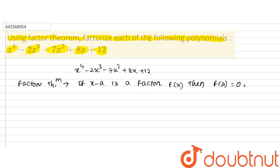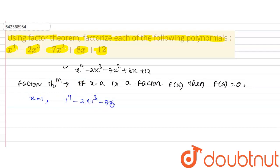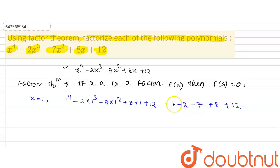That means if we put the value a into the polynomial, the polynomial becomes zero. We will calculate the value of this polynomial for some values by hit and trial method. First, taking x equal to 1: 1⁴ minus 2(1³) minus 7(1²) plus 8(1) plus 12 equals 1 minus 2 minus 7 plus 8 plus 12, which gives minus 8 plus 8, so this is not equal to zero.